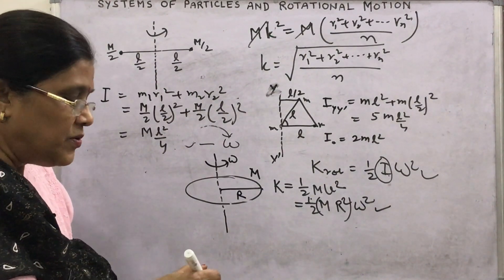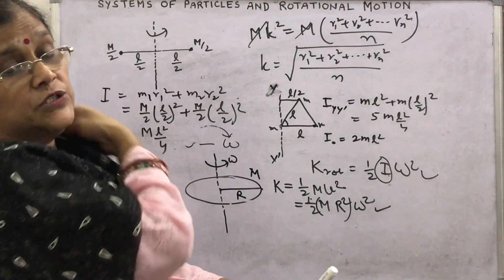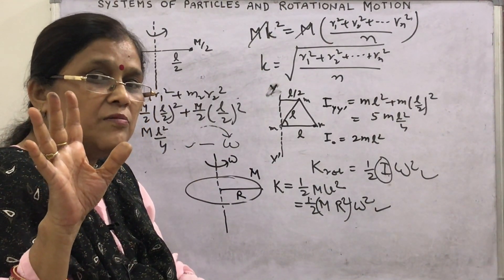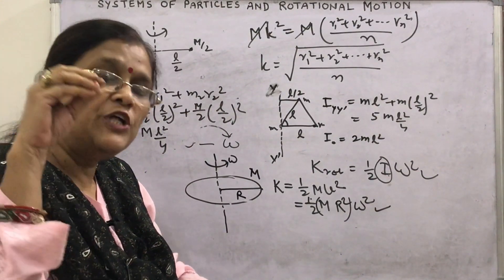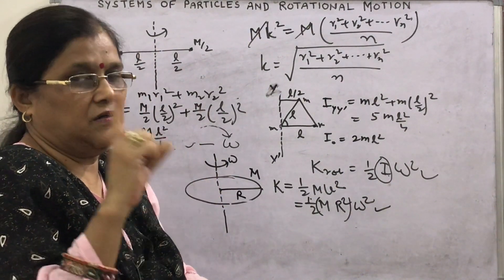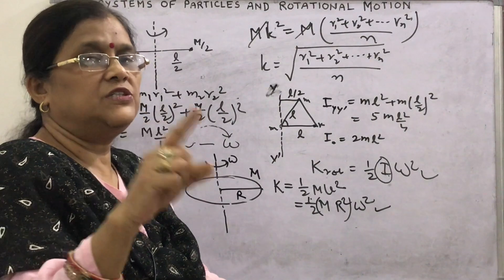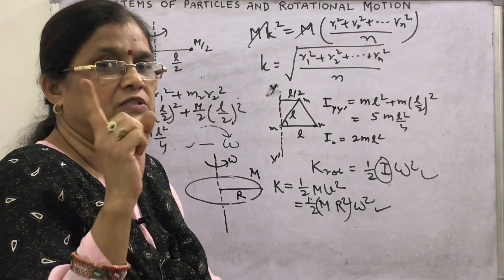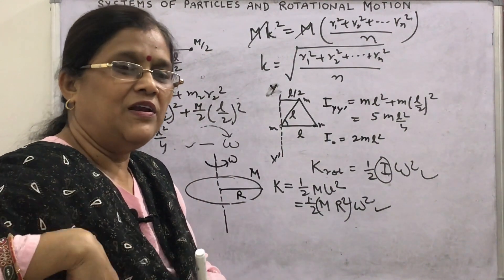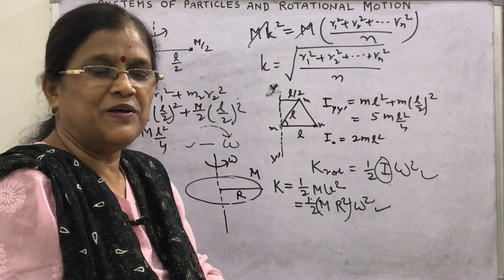So today we discussed what is analogous to mass in rotational motion — that is, moment of inertia. It plays the same role in rotational motion as mass plays in linear motion. It gives rotational inertia: the body will not change its uniform speed of rotation about a certain axis unless a certain torque is applied. I hope you enjoyed. Thank you.